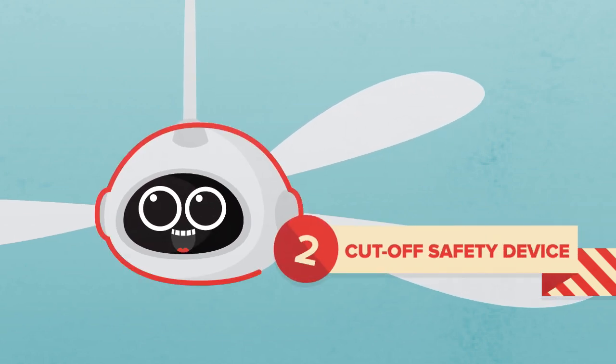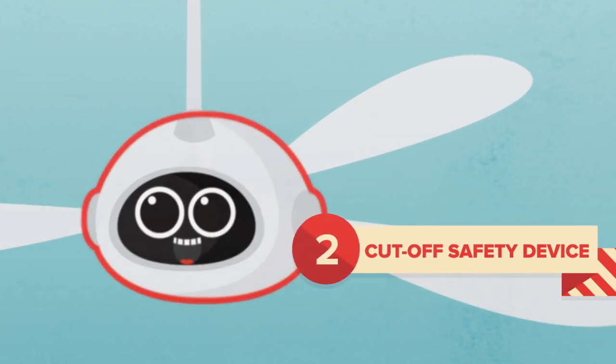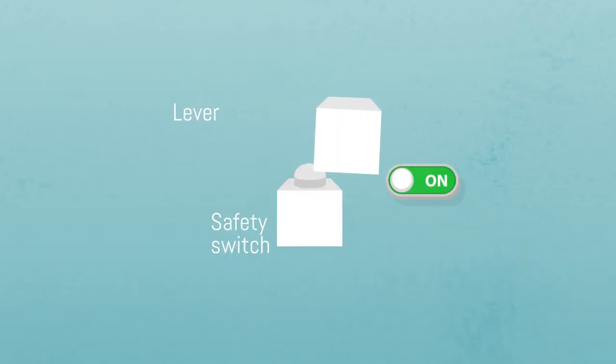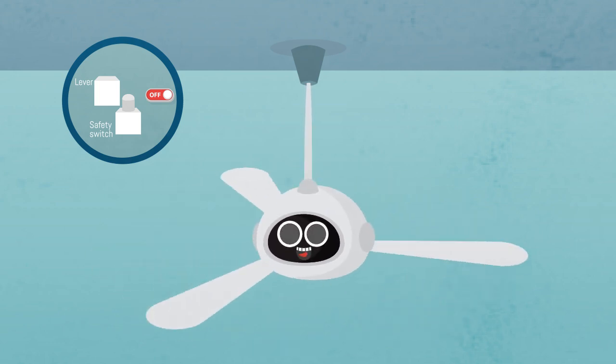2. Did you fix the cut-off safety device? Please check the location of the cut-off safety device. When there's an abnormal wobbling, the lever will detach from the cut-off safety device. The fan will stop, preventing it from continuing wobbling, which will cause a drop.